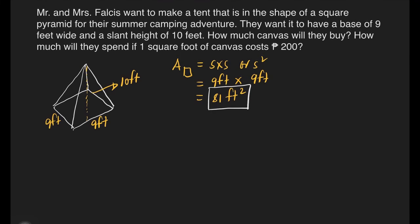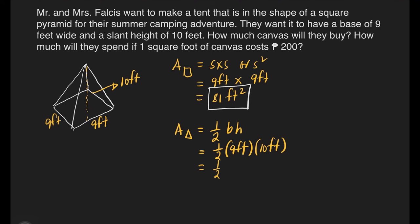Now we are ready to solve for the area of the 4 triangular faces. Let's find the area of 1 triangle first: one half times base times height. The base is 9 feet and the height is 10 feet. 9 times 10 is 90 square feet, and one half of 90 is 45 square feet.